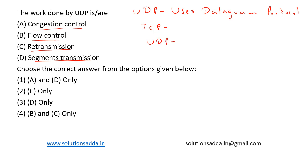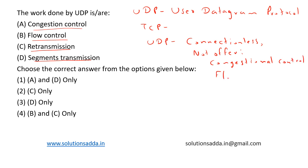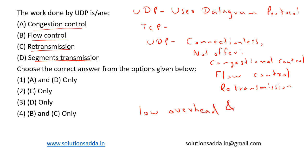UDP is connectionless and does not offer congestion control, flow control, or re-transmission. UDP is actually a simple, lightweight protocol that is used for applications where low overhead and speed are more important than reliability. Low overhead and speed are the priority here — that is the highlighting factor.